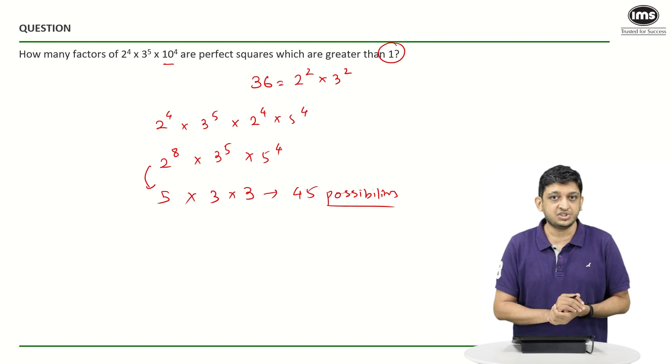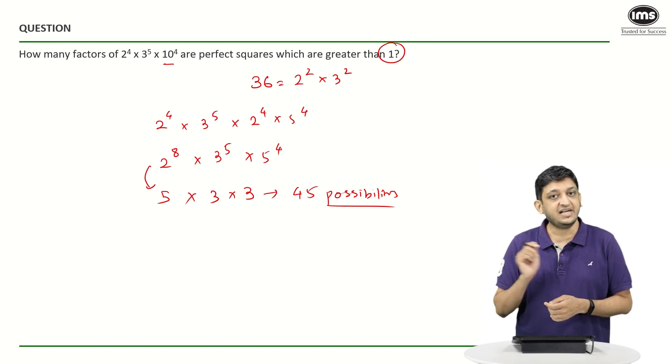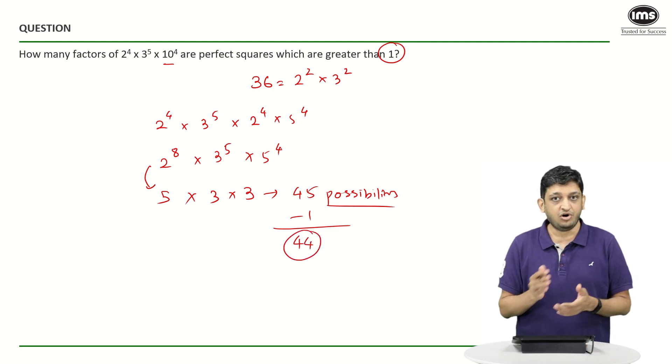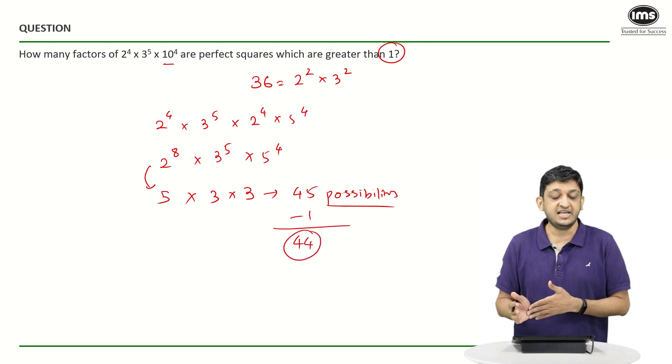So 2⁰ × 3⁰ × 5⁰ will give us 1, which is not a part of our solution set because we need perfect squares that are greater than 1. So excluding that one possibility, the remaining 44 possibilities are all going to be a part of your solution set, and so that will also be your answer.